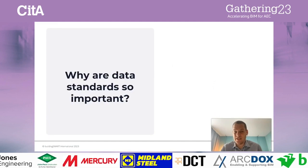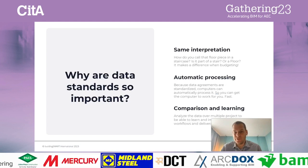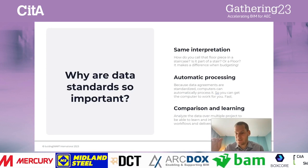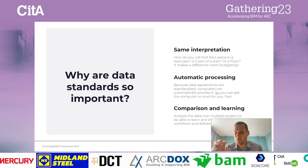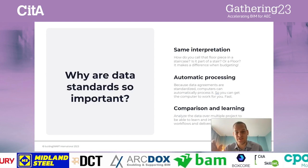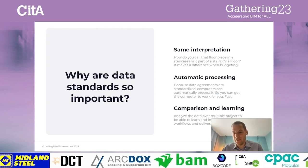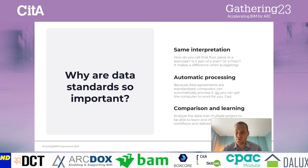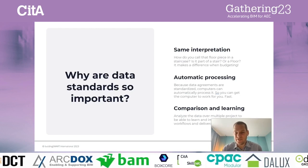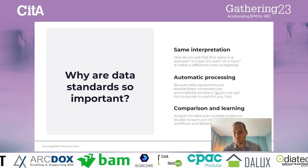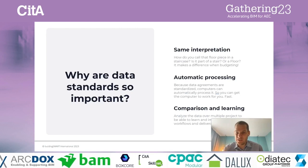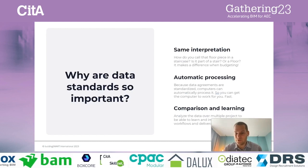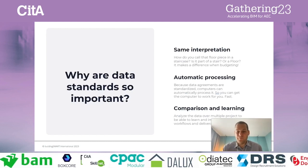So this is all about data. Why are data standards so important? To make sure that we talk about the same thing. For example, that floor element in a staircase — is it part of the staircase or part of a floor? That's important to have a common definition when you do cost estimation or planning. Who pays for that? Is it the responsibility of the floor manufacturer or the staircase manufacturer? Standards are important for that reason. And secondly, most importantly, because these data structures are standardized, computers can automatically process them. The computer works for you — that's what automation is about.